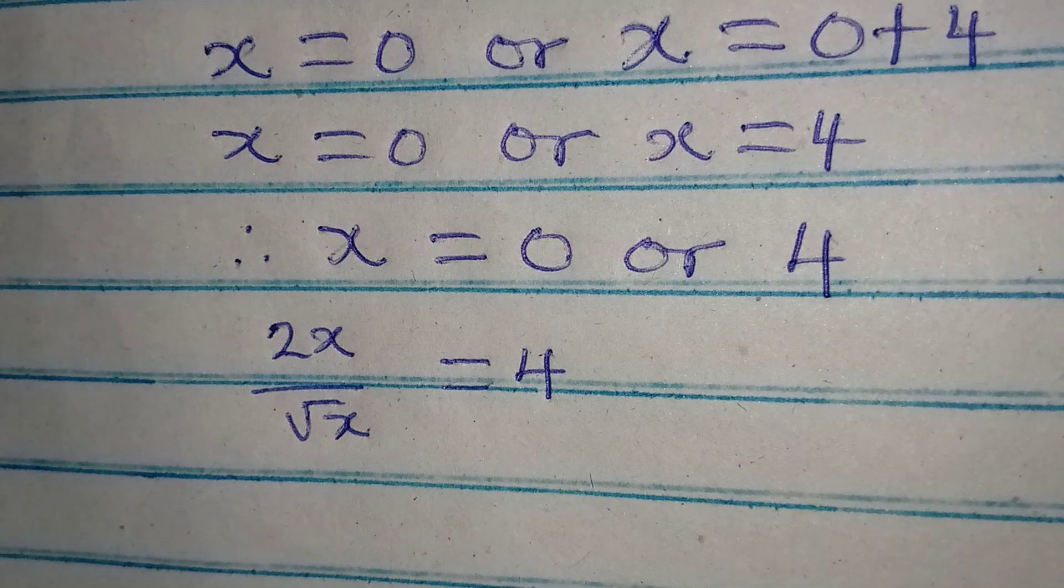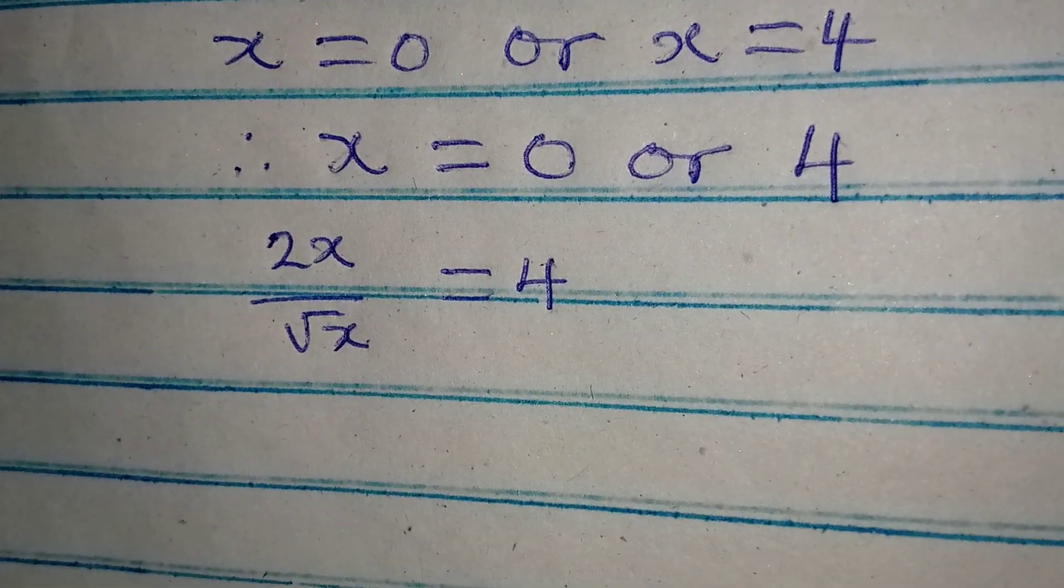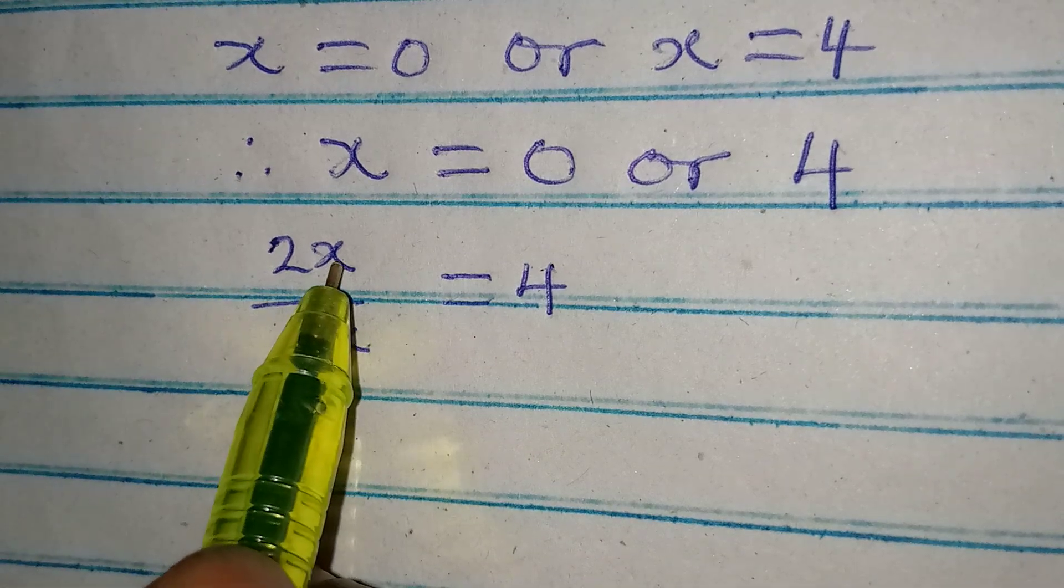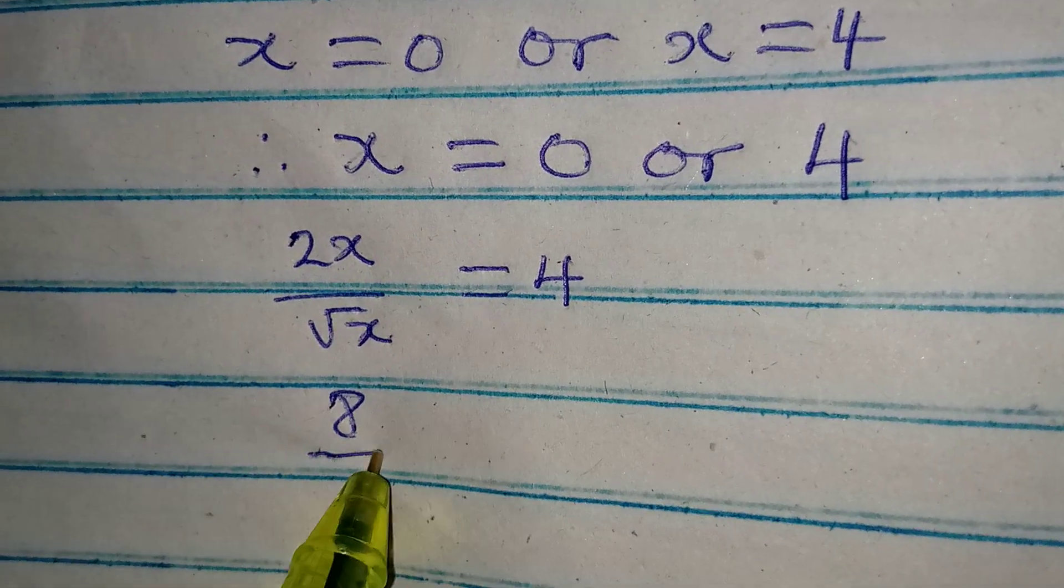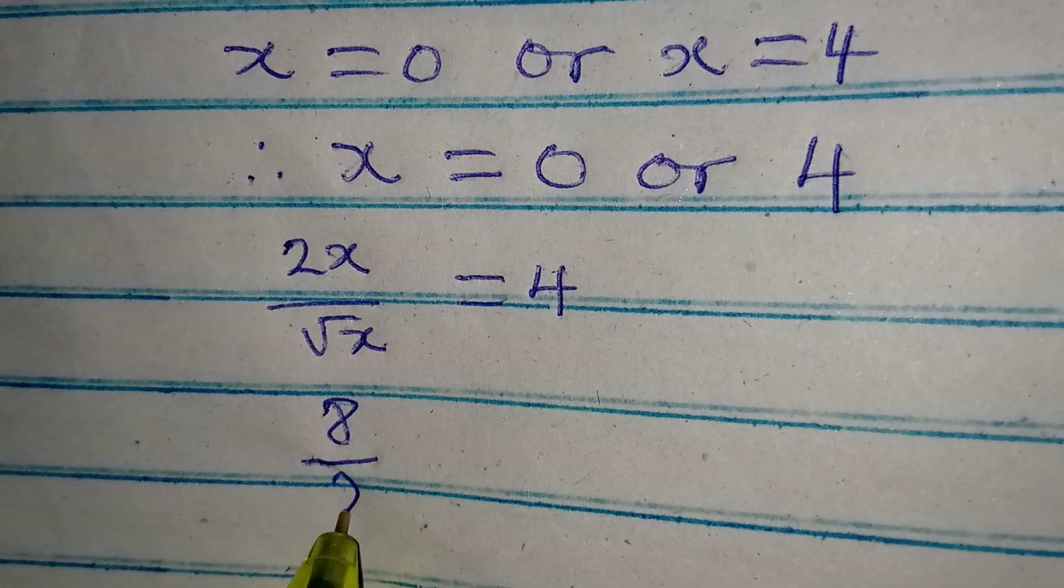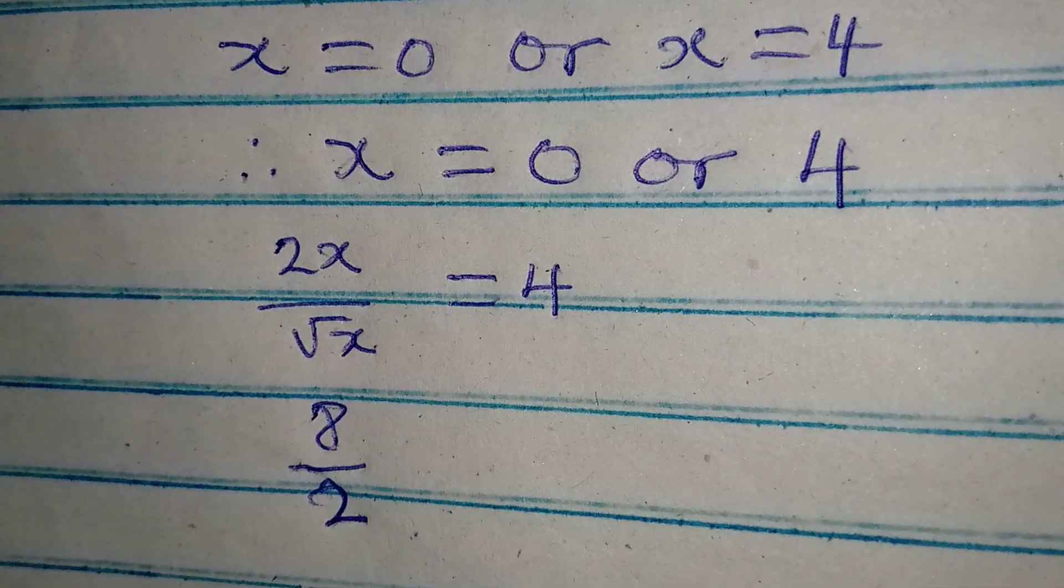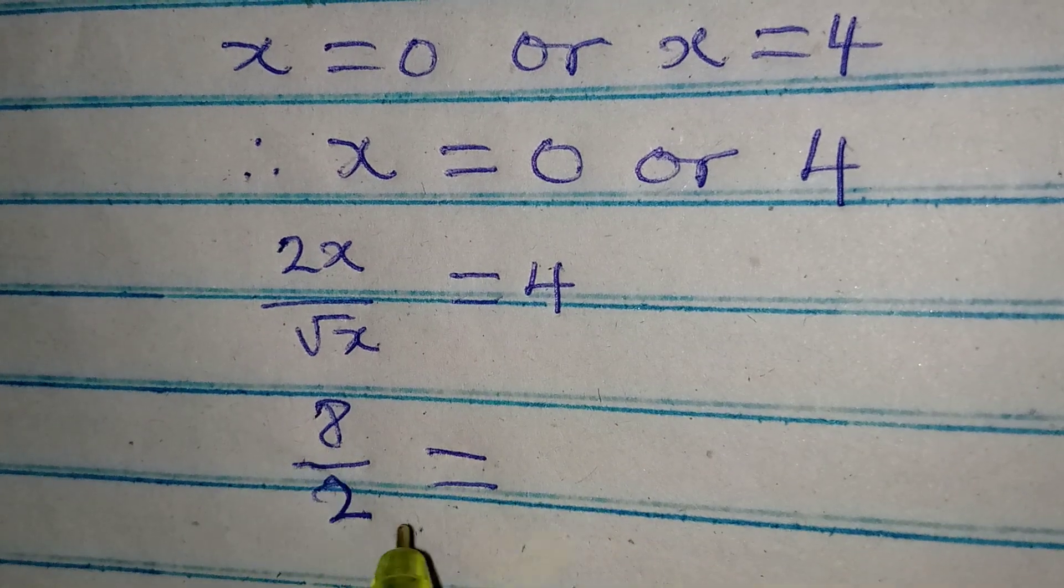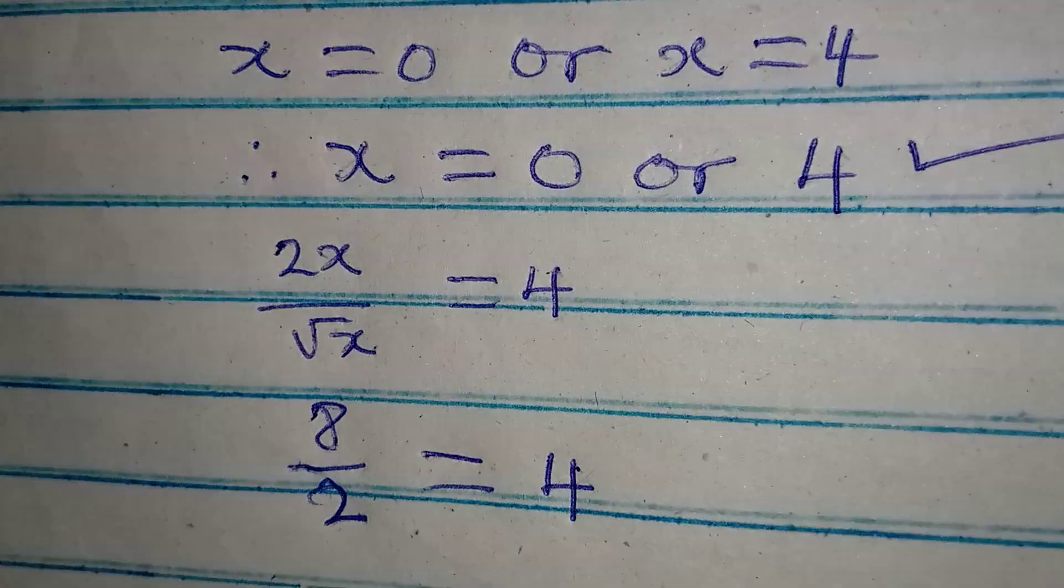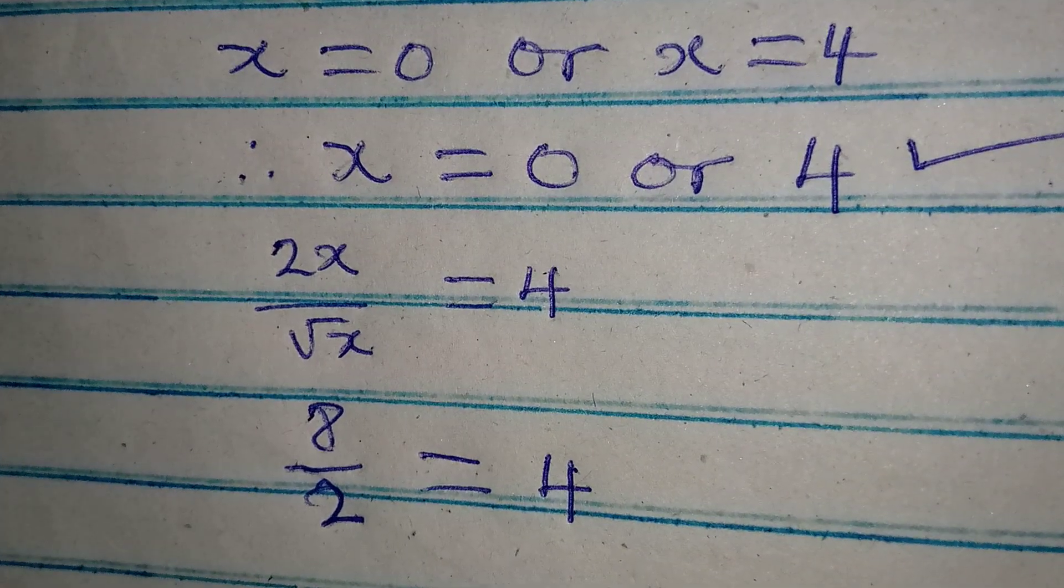But if you put in x to be equal to 4, then you have 2 times 4, that will give 8, over square root of 4. And square root of 4 is 2. So from here, 8 over 2 is definitely 4. So this is the only value of x that satisfies the equation.